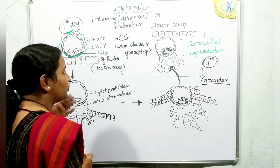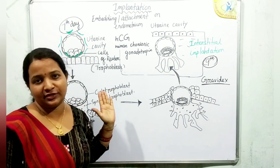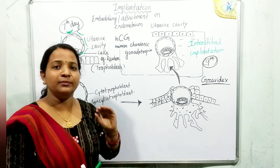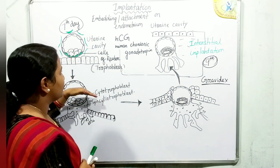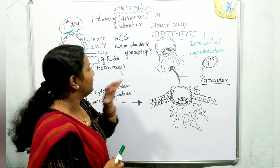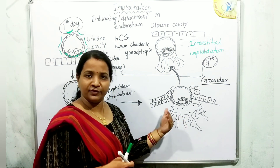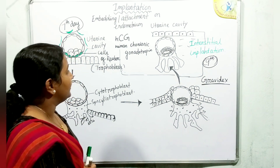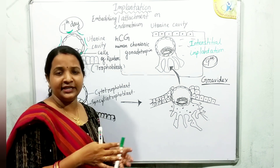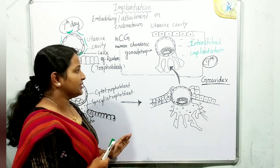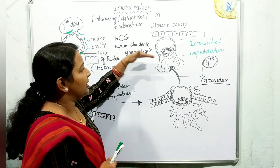hCG secretion begins when the trophoblastic cell layer is first formed in the blastocyst, initially in very small amounts. Gradually the syncytiotrophoblastic cells secrete more and more hCG, which is excreted in the urine by the next menstrual cycle. The presence of hCG in urine is indicative of implantation or pregnancy.